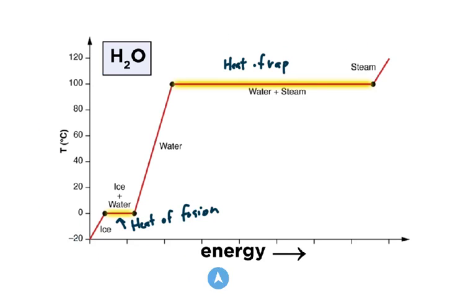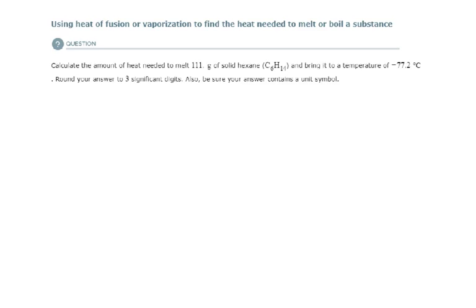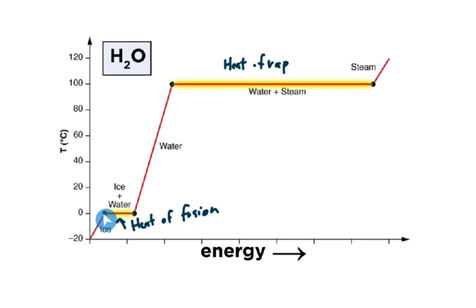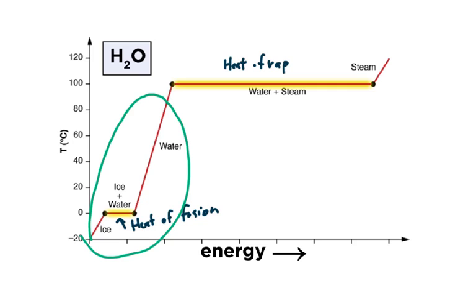Keep this heating curve in mind as you tackle every one of these problems — figure out where you're starting and where you're ending up. We are starting with 111 grams of solid hexane and we want to bring it to a temperature of negative 77.2 degrees Celsius. All we're doing is going from solid to liquid. How do I know? The problem says 'needed to melt' — they did not say vaporize. Melting involves the heat of fusion, going from solid to liquid. We're not going past that point. All we're going to do is heat up the solid hexane, melt it, and then heat the liquid hexane to some temperature. We're not going to vaporize it at all.